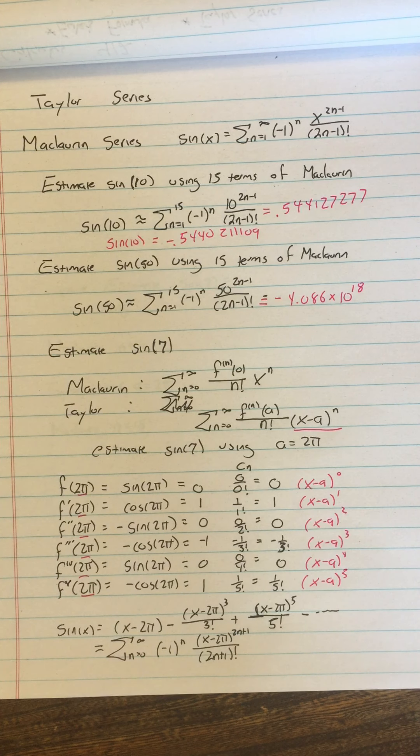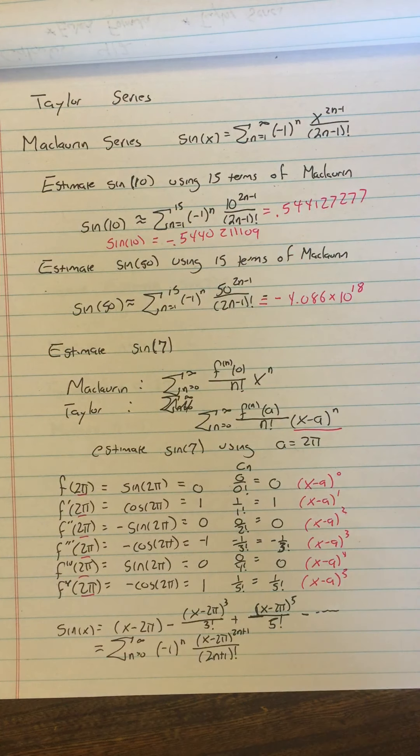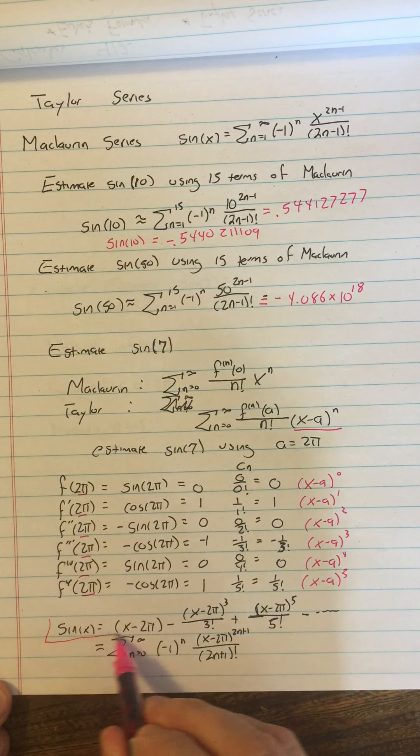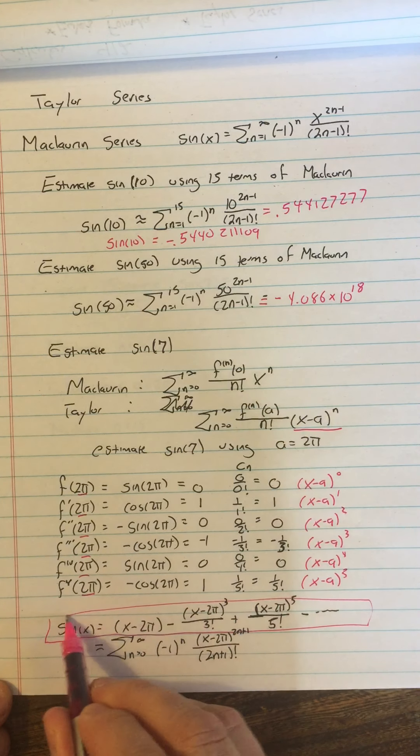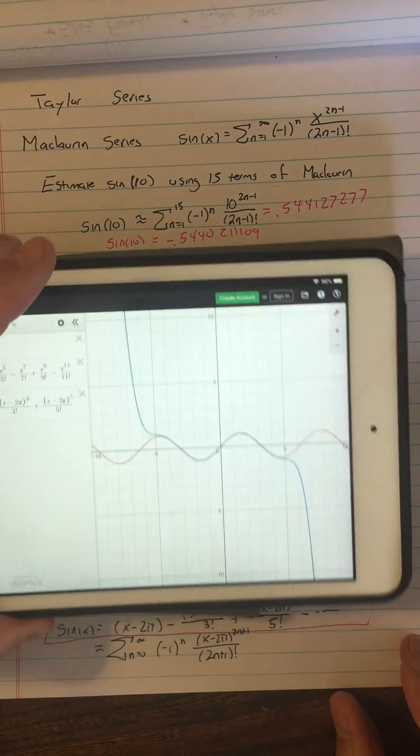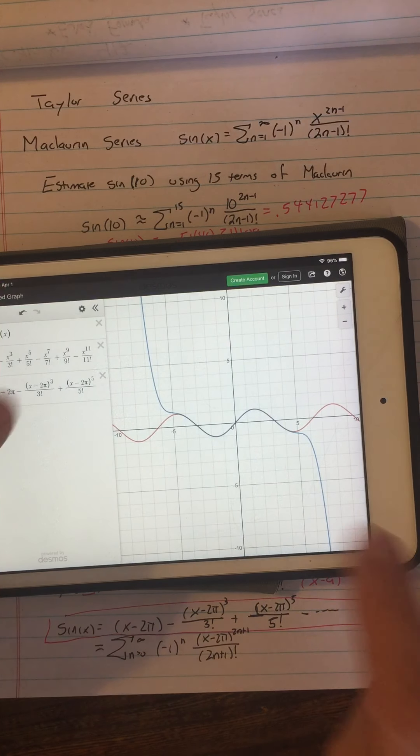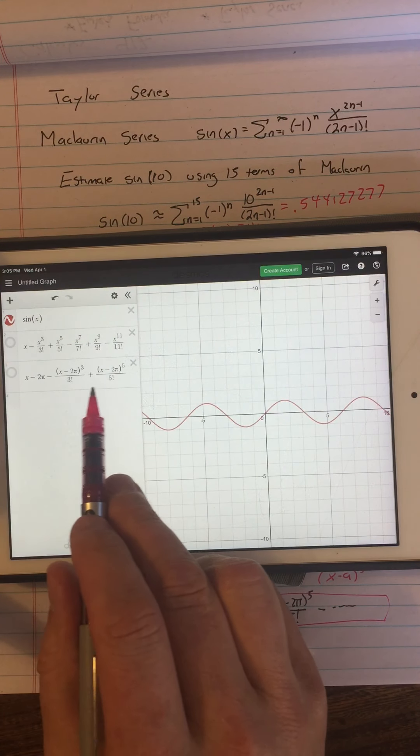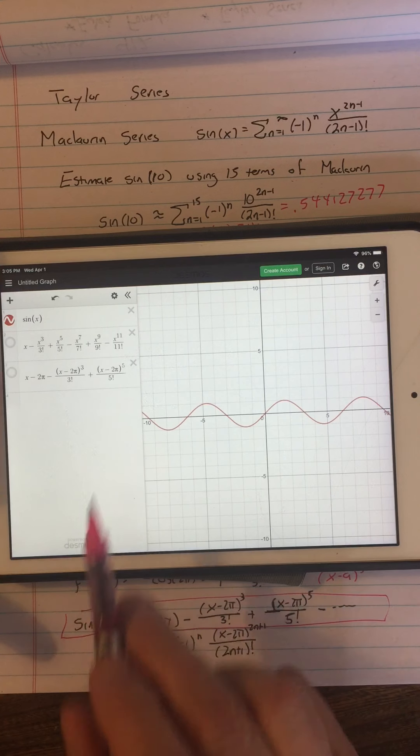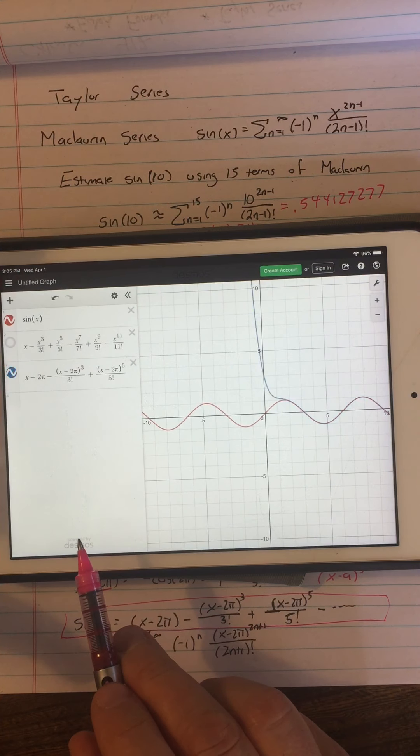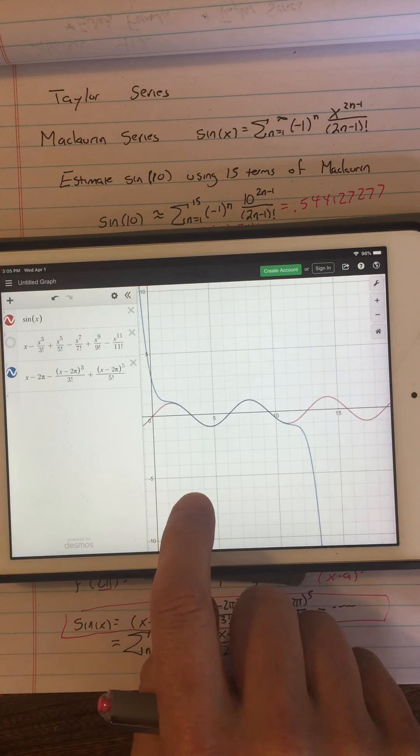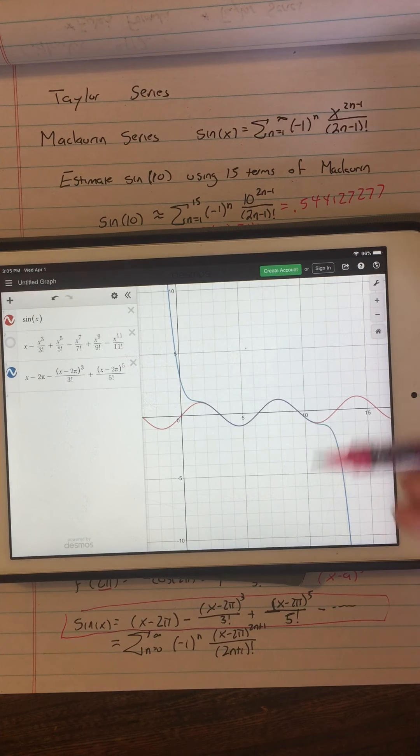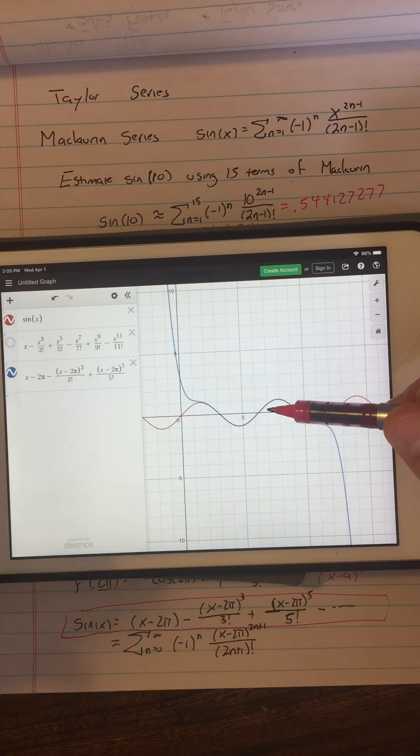So, I think I have just enough time to show you what this looks like as a graph, so how does this change the picture that I had here? Well, this is our Maclaurin series, so I'm going to turn that off, and I'm going to turn on, see I wrote out here the Taylor series already, see the minus 2π's over there? Turn that on, and see what it does? You have the same polynomial, but it's shifted over, so that if I wanted to do sin of 7, I would have really good agreement.